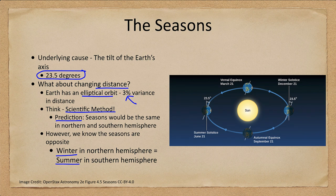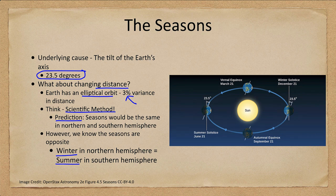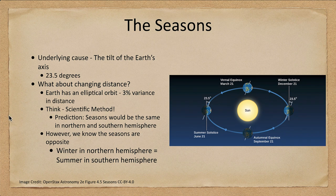Because our prediction does not come true, that requires a modification of our hypothesis. We look back to see what else could cause the seasons. Another thing to consider is that it turns out Earth is closest to the Sun in January and furthest away in July. So for those in the northern hemisphere, that is exactly the opposite of what you would expect for seasonal changes.